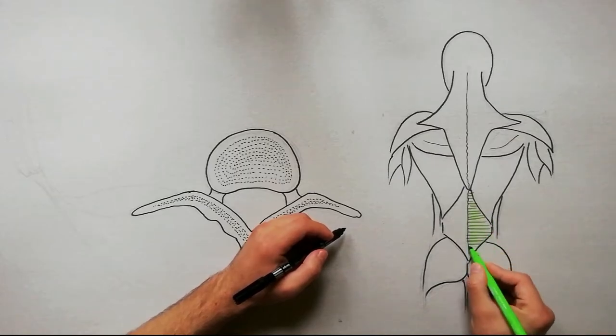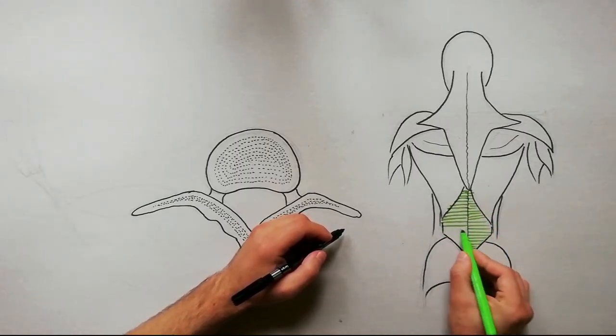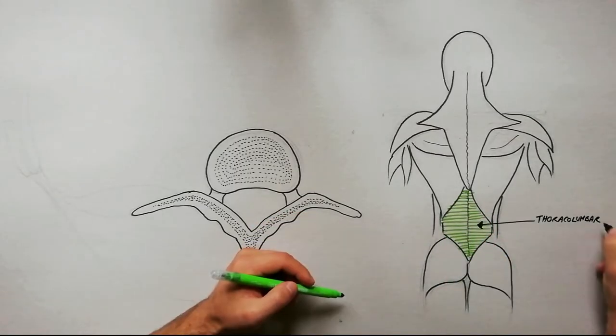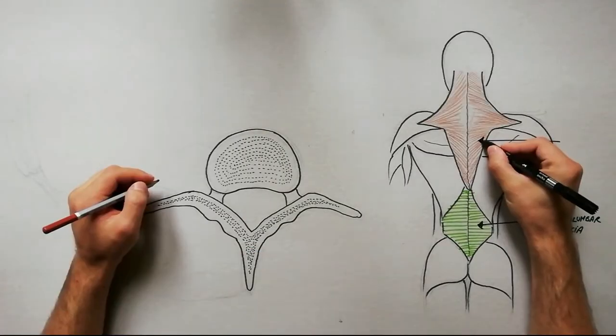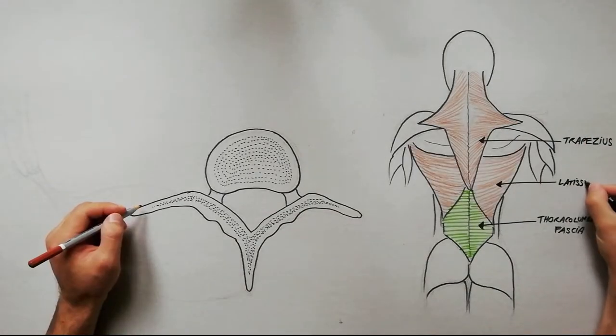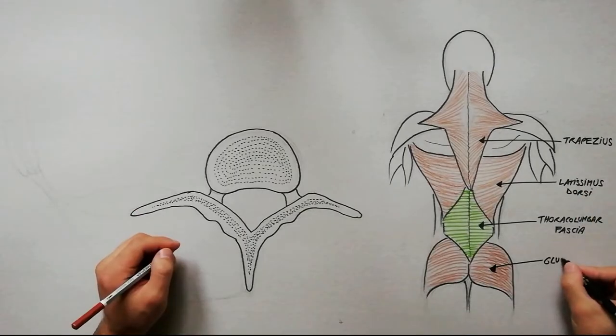In the lumbar region it has a diamond shape and is particularly thick, acting as an attachment site for the trapezius muscle, latissimus dorsi and gluteus maximus.